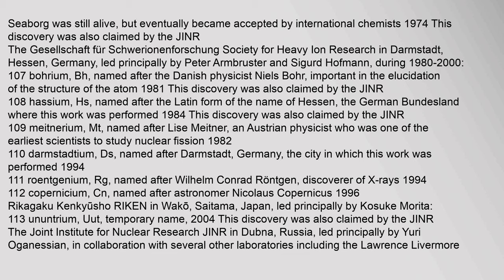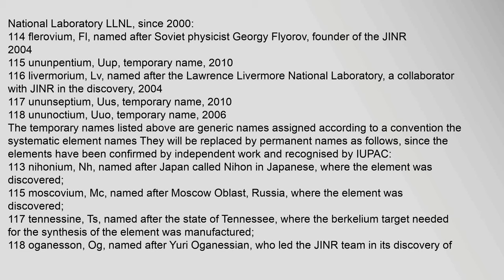Rikagaku Kenkyusho (RIKEN) in Wako, Saitama, Japan, led principally by Kosuke Morita, discovered element 113, Ununtrium (Uut), temporary name, 2004 — also claimed by the JINR. The Joint Institute for Nuclear Research (JINR) in Dubna, Russia, led principally by Yuri Oganessian in collaboration with several other laboratories including Lawrence Livermore National Laboratory (LLNL) since 2000, discovered: element 114, Flerovium (Fl), named after Soviet physicist Georgi Flyorov, founder of the JINR, 2004; and element 115, Ununpentium (Uup), temporary name, 2010.